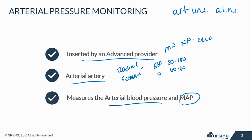The mean arterial pressure, or MAP, is the minimum pressure required to perfuse organs. This is a very important number because you have to keep it greater than 65. If it's at least 65, you know that organs are being perfused. If it's less than that, there's not enough blood flow getting to the vital organs.